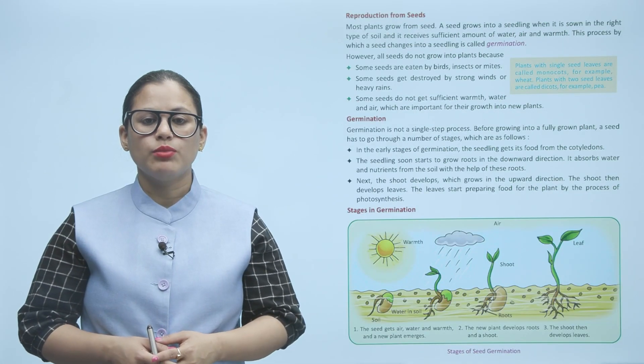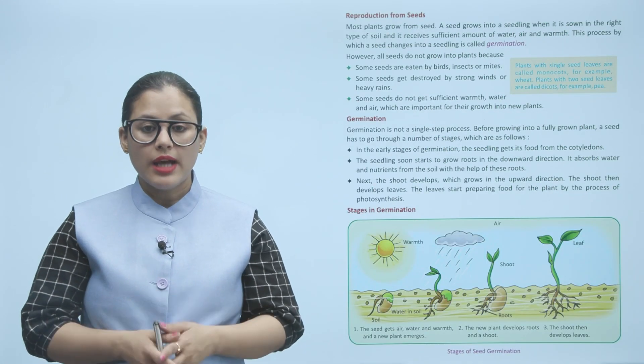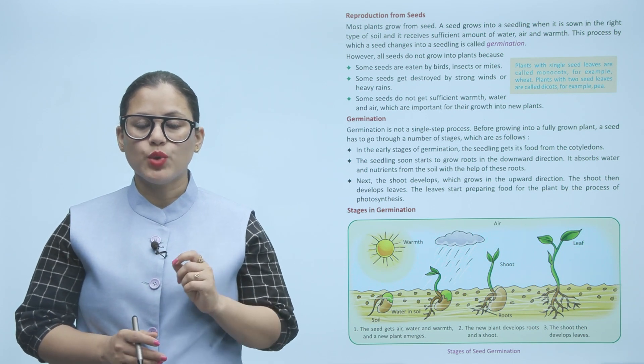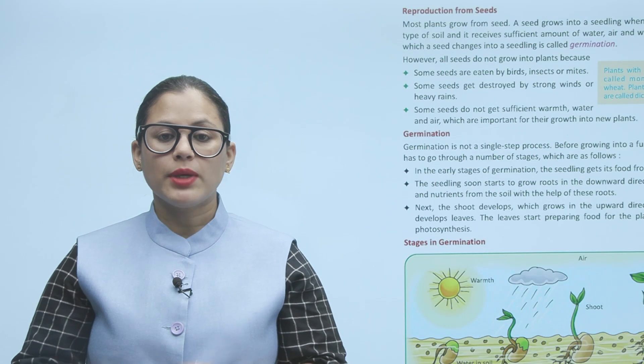Plants with single seed leaves are called monocots, for example wheat. Plants with two seed leaves are called dicots, for example pea.